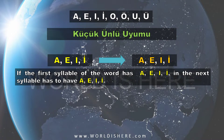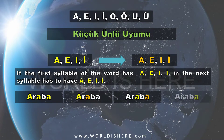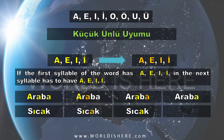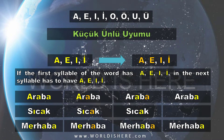According to küçük ünlü uyumu: if the first syllable has A, E, I, or İ, the next syllable has to have A, E, I, or İ. For example, araba — the first vowel is A, so the next is A, and then the next is also A, so küçük ünlü uyumu is working here.